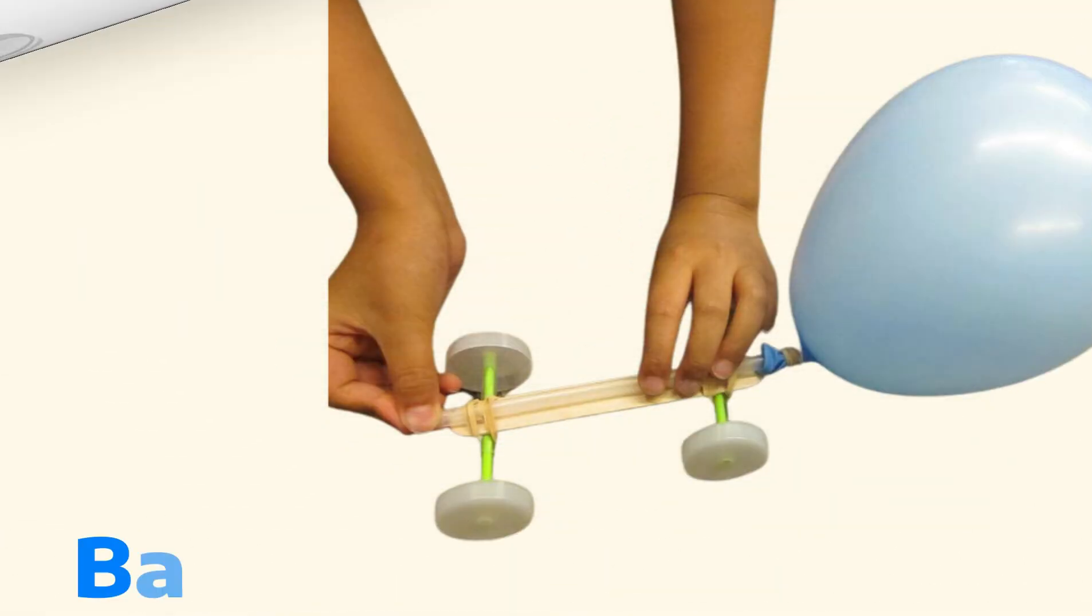If you want to try out the balloon car, you need a similar structure but attach a balloon to the end of a straw where you can blow up that straw and point it in the opposite direction that you want your car to travel.